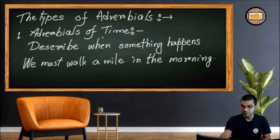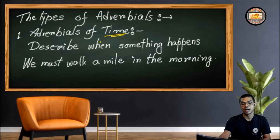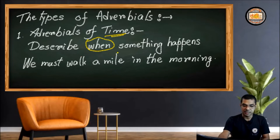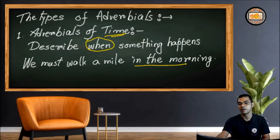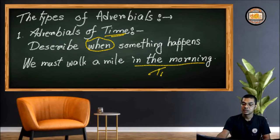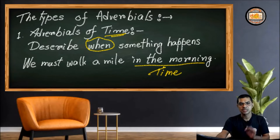Just like adverbs of time, adverbials of time also describe when something happens. For example: 'We must walk a mile in the morning.' Here, if we consider 'in the morning' — this particular prepositional phrase — and ask 'we must walk a mile when?', the answer is 'in the morning.' So this suggests time, and this is an adverbial of time, just like adverbs of time.